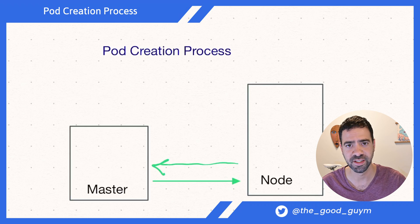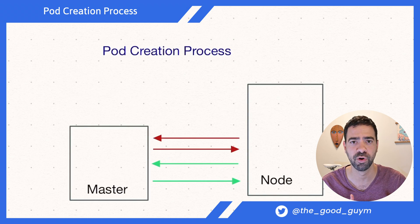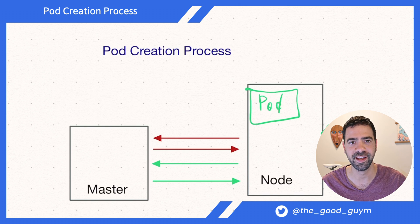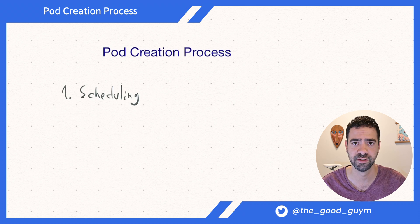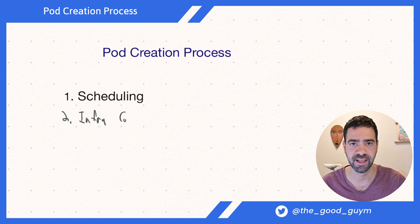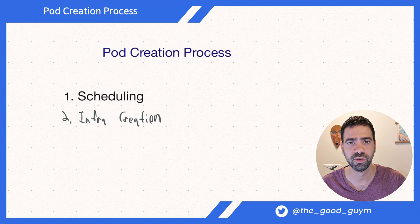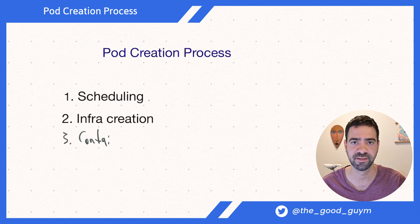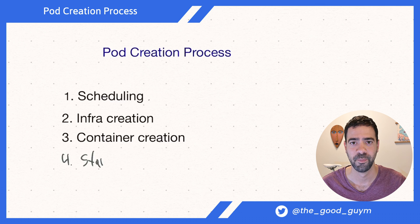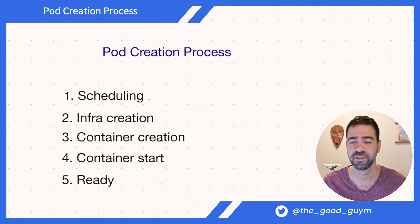The creation process is complex and requires multiple components to work together to bring the pods to run properly. First, we have scheduling, when Kubernetes looks for the best node to run the pods on. The second stage is the infrastructure creation stage, when Kubernetes creates and brings in a lot of the components the containers need to run with — for example, volumes and file systems. After that, Kubernetes creates the containers themselves, starts them, makes them running, and waits for them to be ready. And after they are ready, everything is perfect.